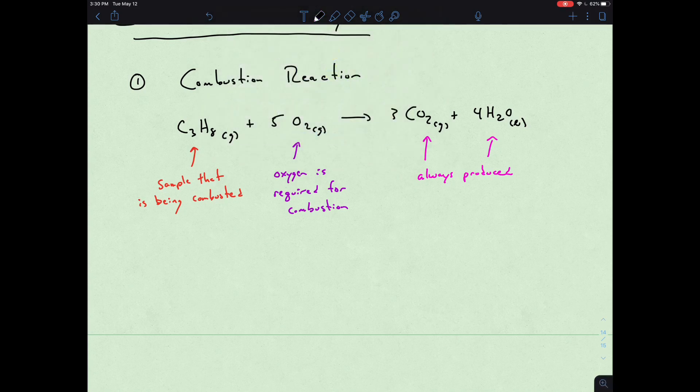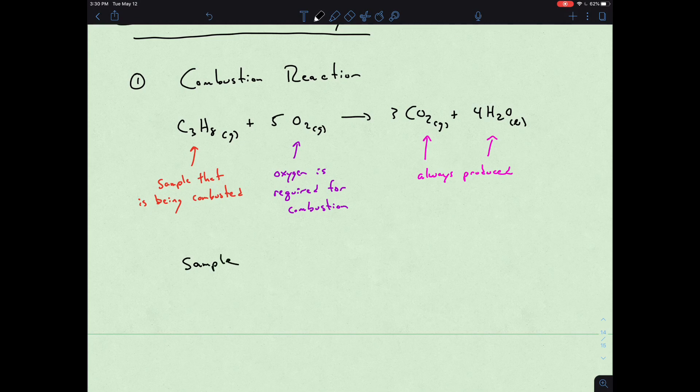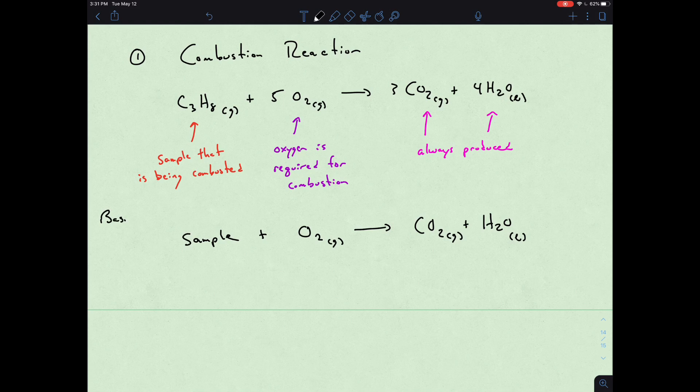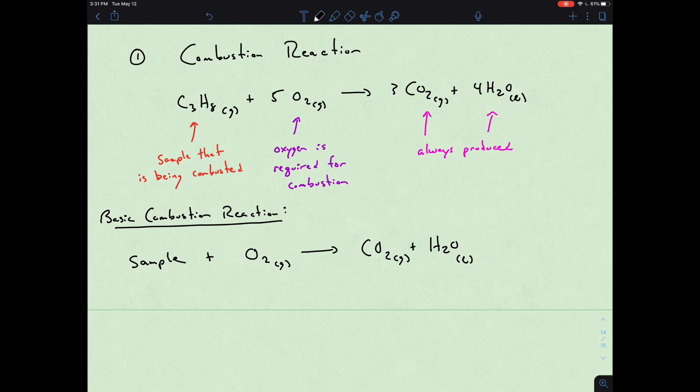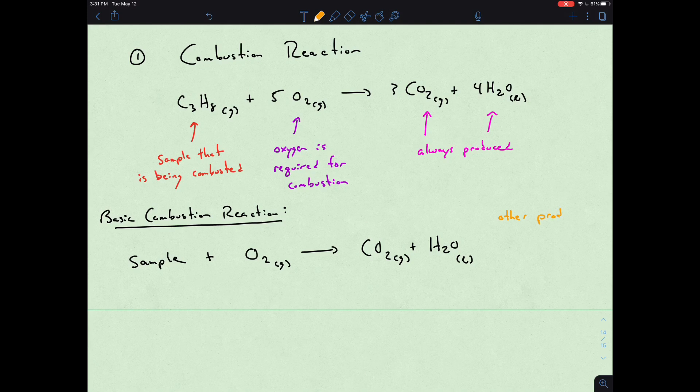You can think of it in a general sense: you have a sample, you have oxygen, and then you combust to produce carbon dioxide and H2O. And so there is your basic combustion reaction. There is the possibility of other products, but it really depends on the sample. We could produce nitrogen gas or chlorine gas or other things like that, but it would just be based on the formula of the sample that we're actually combusting.